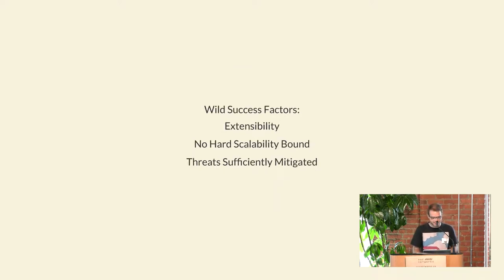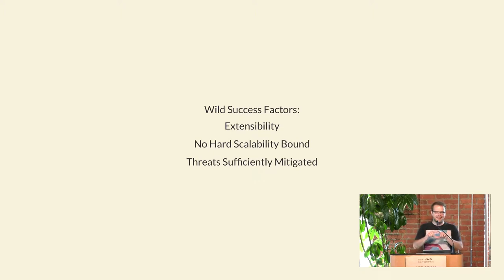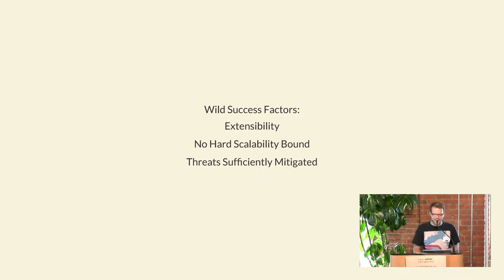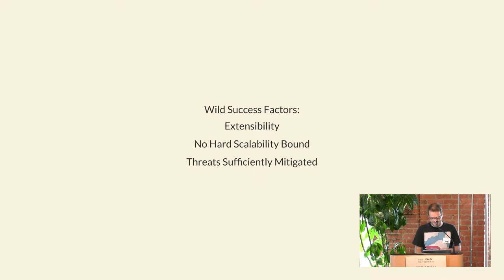So those were just the basic success factors. In this RFC they have a little graph to illustrate the difference between basic success and wide success. The x-axis is use cases, the y-axis is how wide the protocol has spread. Basic success means the protocol is used exactly for what it was meant. Wide success is a big box around that — it means it's being used for much, much more than it was meant for, in terms of use cases and scale. The factors for that are extensibility, no hard scalability bounds, and threats sufficiently mitigated. That's where I'm coming from with this thinking about tactics.